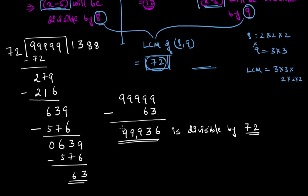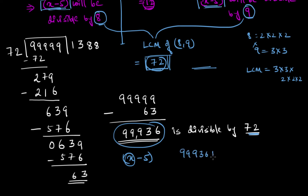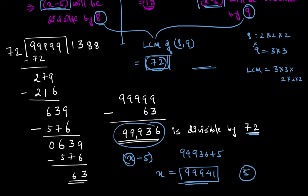So 99936 is my x minus five — this number is divisible by 72. But I'm not concerned about x minus five; I'm concerned about x, the number that leaves a remainder of five. So I'll add five to this value: 99936 plus 5 equals 99941. That is my x — when this number is divided by eight and nine it will leave a remainder of five.